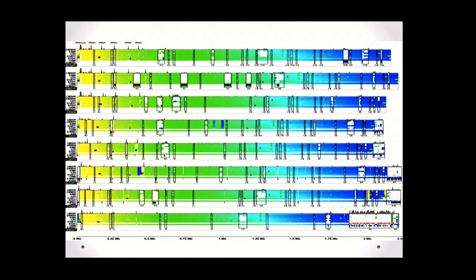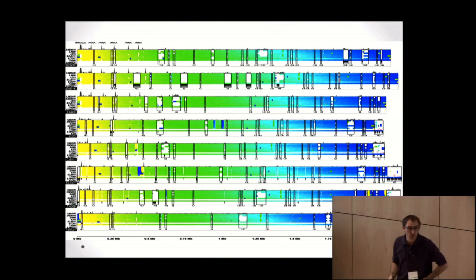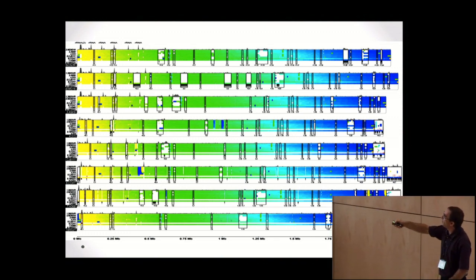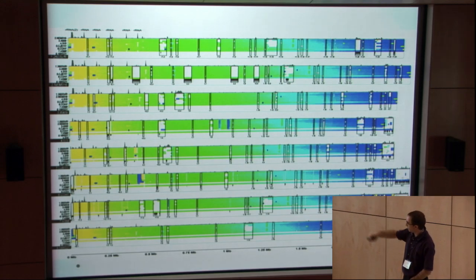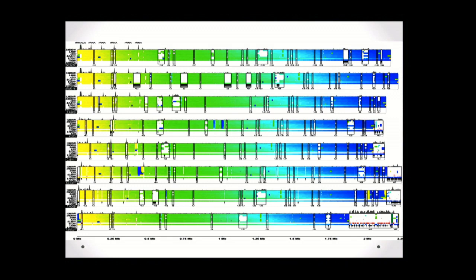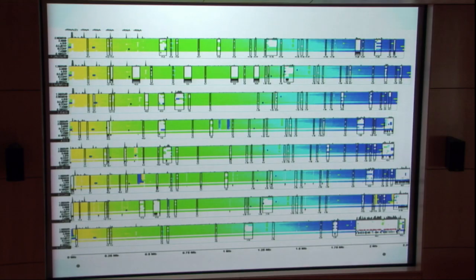This is reference-based, which is limiting because I don't know what's in a given region of a particular strain. If we want to do this without the constraint of a single reference, you can make everybody a reference. Here we have Group B Strep, which causes meningitis in infants. We have eight genomes and made each of the eight genomes a reference, giving all those panels.